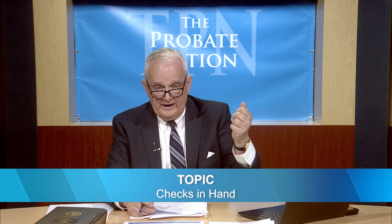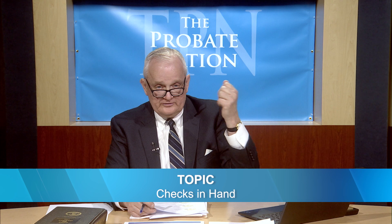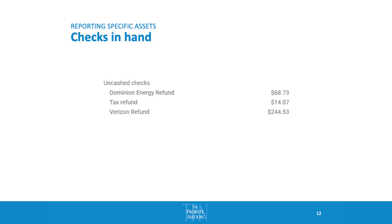For uncashed dividend checks, list who the check is from, the date of the check, and the amount. That's basically it for uncashed checks.